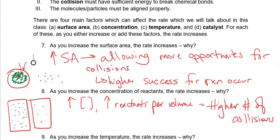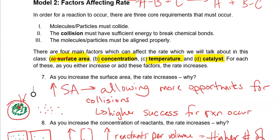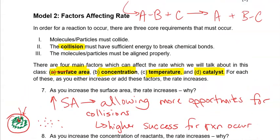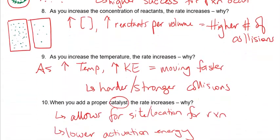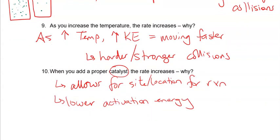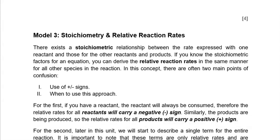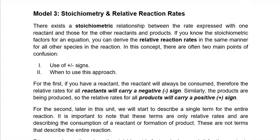So we've talked about a few key factors: surface area, concentration, temperature, and the use of a catalyst. As you increase all of these, you're going to make the reaction go faster. And we also covered that in order for a reaction to occur, you must have a collision, it must have sufficient energy, and it must have the right orientation. When we come back, we're going to start talking about how stoichiometry affects the rate of the reaction.